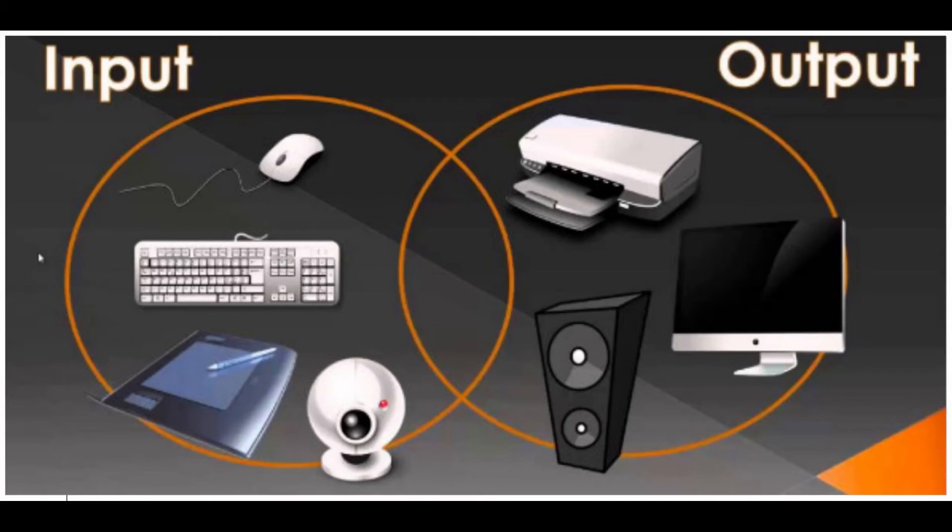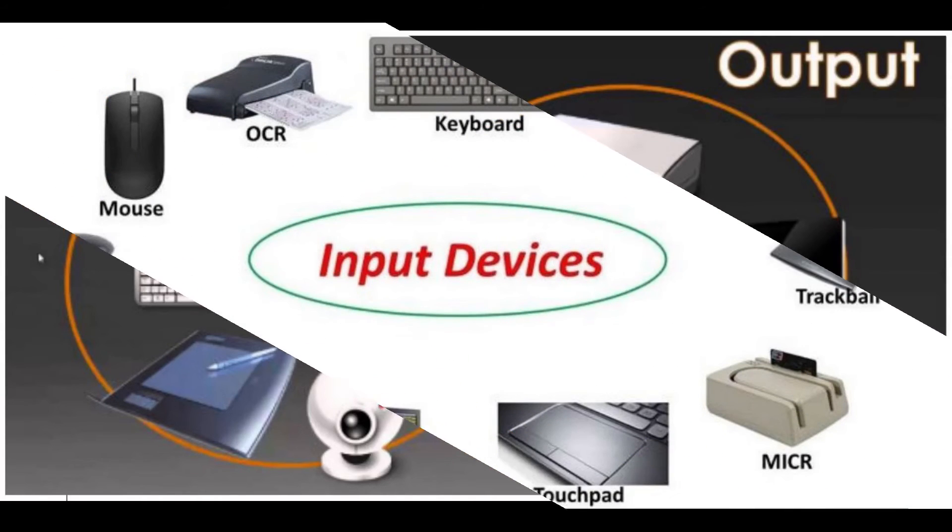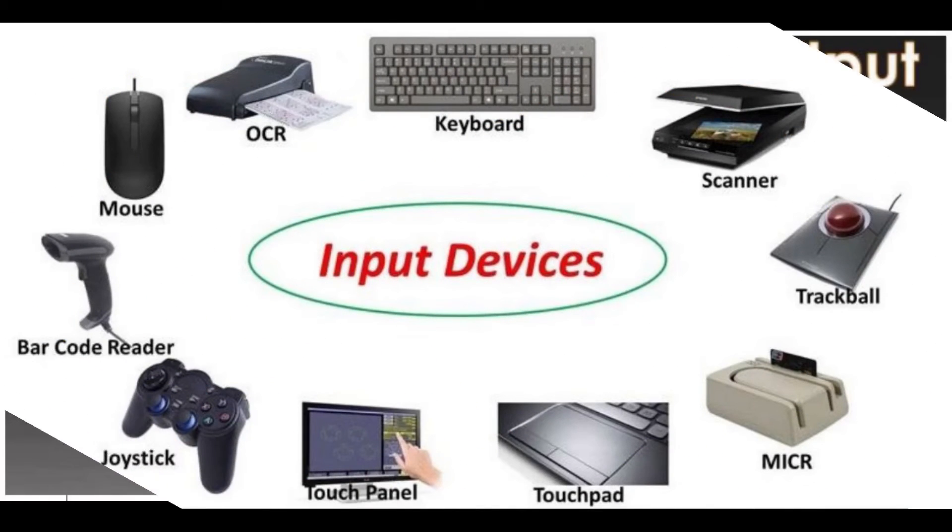Barcode Reader is a device used for reading barcoded data, data in the form of light and dark lines. Barcoded data is generally used in labeling goods, numbering the books, etc. It may be a handheld scanner or may be embedded in a stationary scanner. Barcode Reader scans a barcode image, converts it into an alphanumeric value, which is then fed to the computer that the barcode reader is connected to.